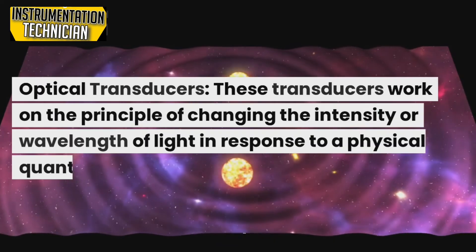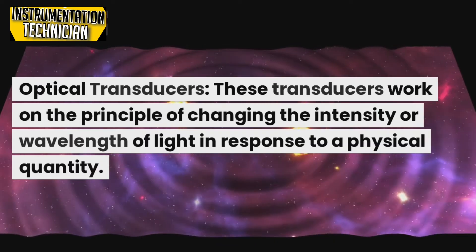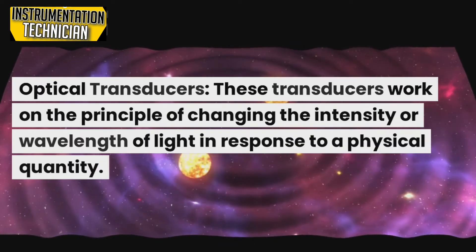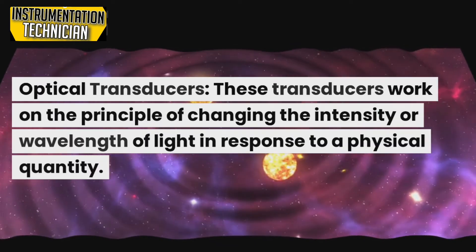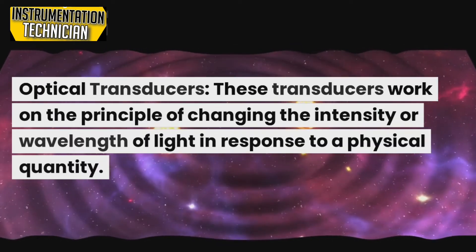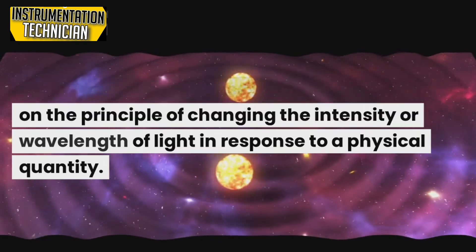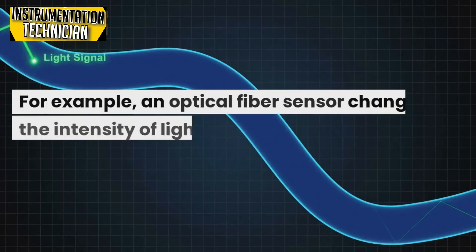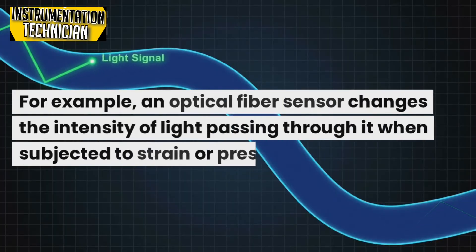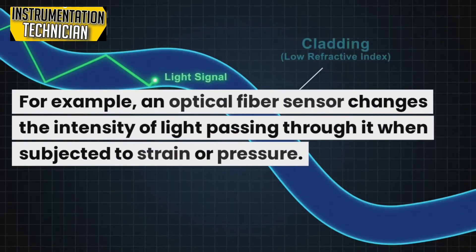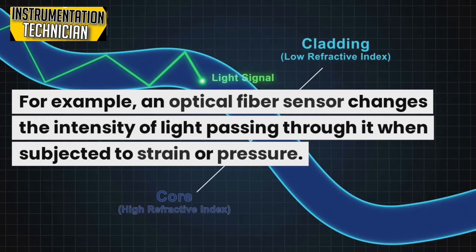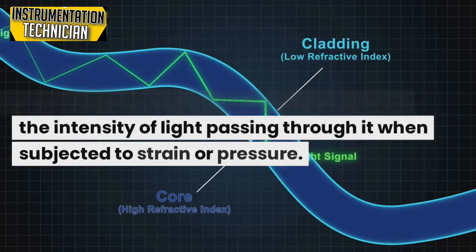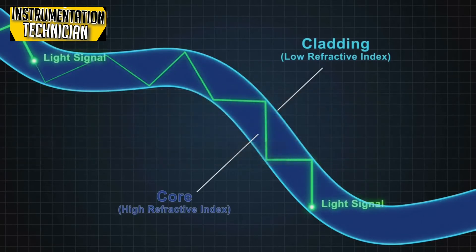Optical transducers work on the principle of changing the intensity or wavelength of light in response to a physical quantity. For example, an optical fiber sensor changes the intensity of light passing through it when subjected to strain or pressure.